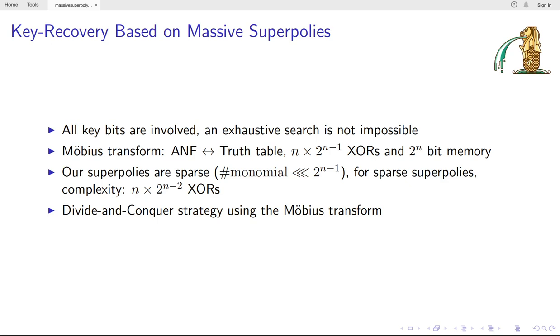So, for sparse Super-Poly with a fine-grained analysis, the time complexity can be reduced to n times 2^(n-2) XOR. And then we can use the Möbius transform and our divide and conquer strategy to do the key recovery.